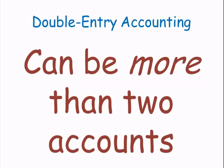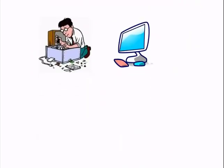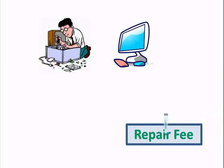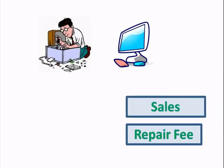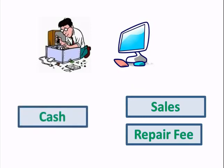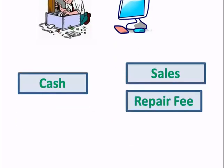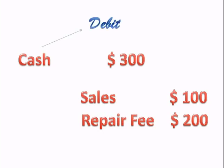Remember that there may be more than two accounts. Take an example of a computer repair shop that also sells merchandise. A customer comes in to pick up her repaired computer and buys some computer accessories as well. The repairman charges her $200 for fixing the computer and adds $100 for the accessories. The customer pays $300 in cash. When preparing the journal entry, we would debit cash and credit both sales and repair fee revenue.